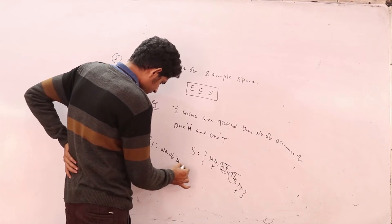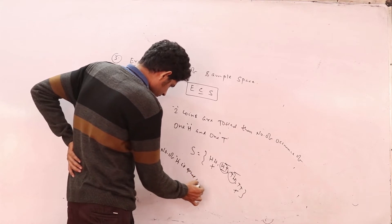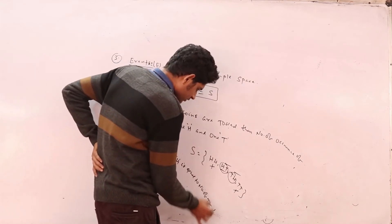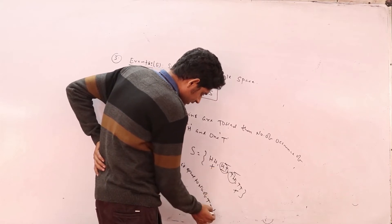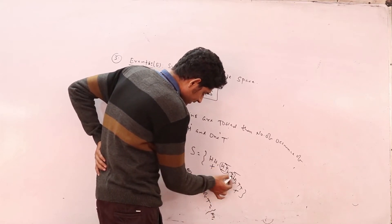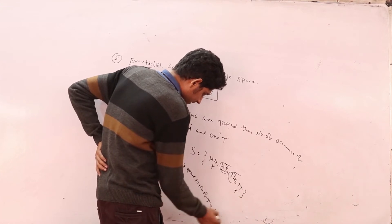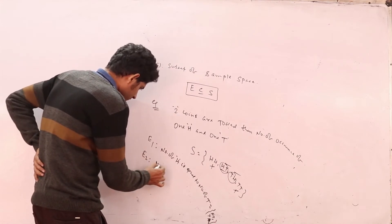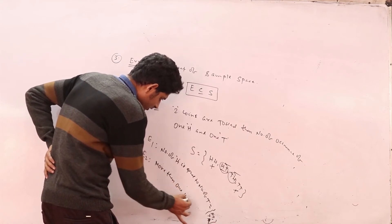The number of heads equals the number of tails, so the event is {HT, TH}. Another event: more than one head.